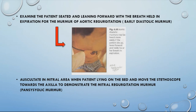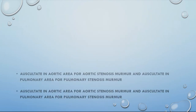Auscultate in the mitral area with the patient lying on the bed, then move the stethoscope towards the axilla to demonstrate the mitral regurgitation murmur. In mitral regurgitation, the murmur is heard in the mitral area and radiates to the axilla. This murmur is a pan-systolic murmur.